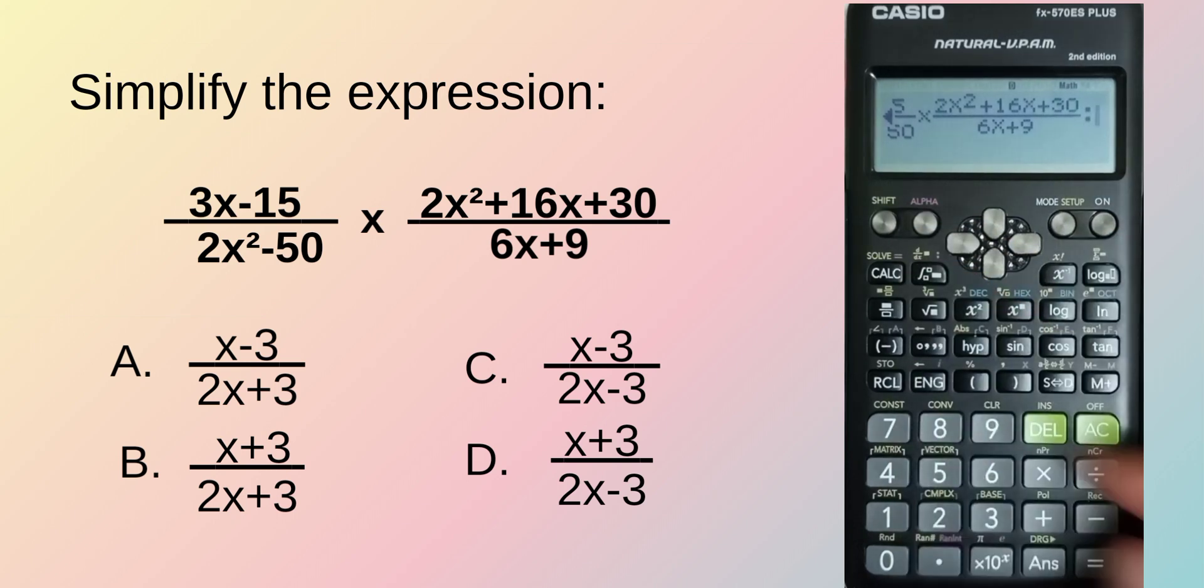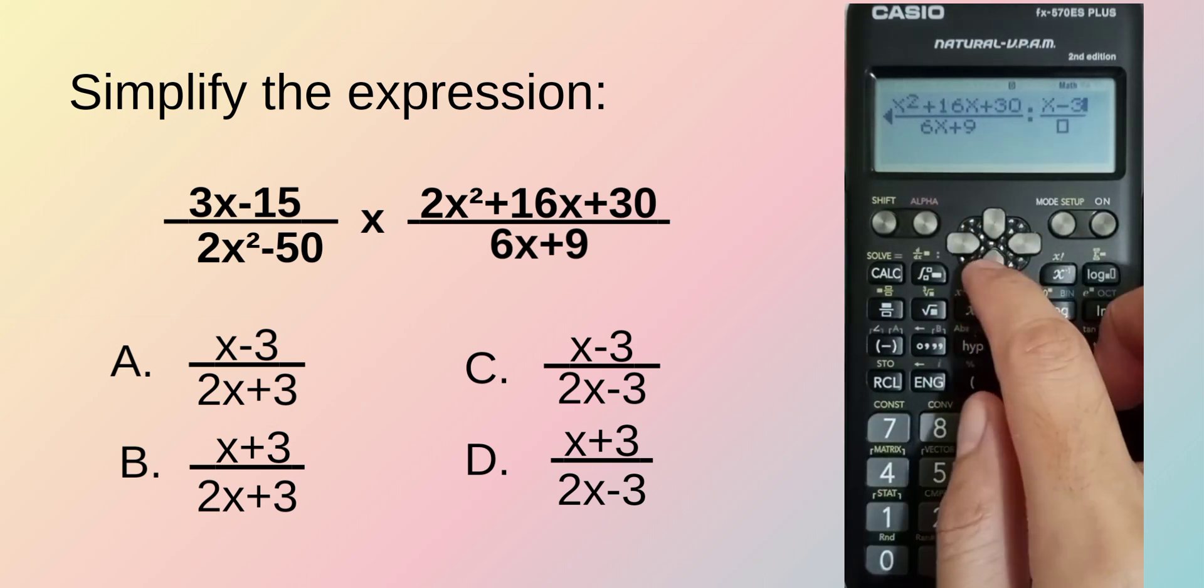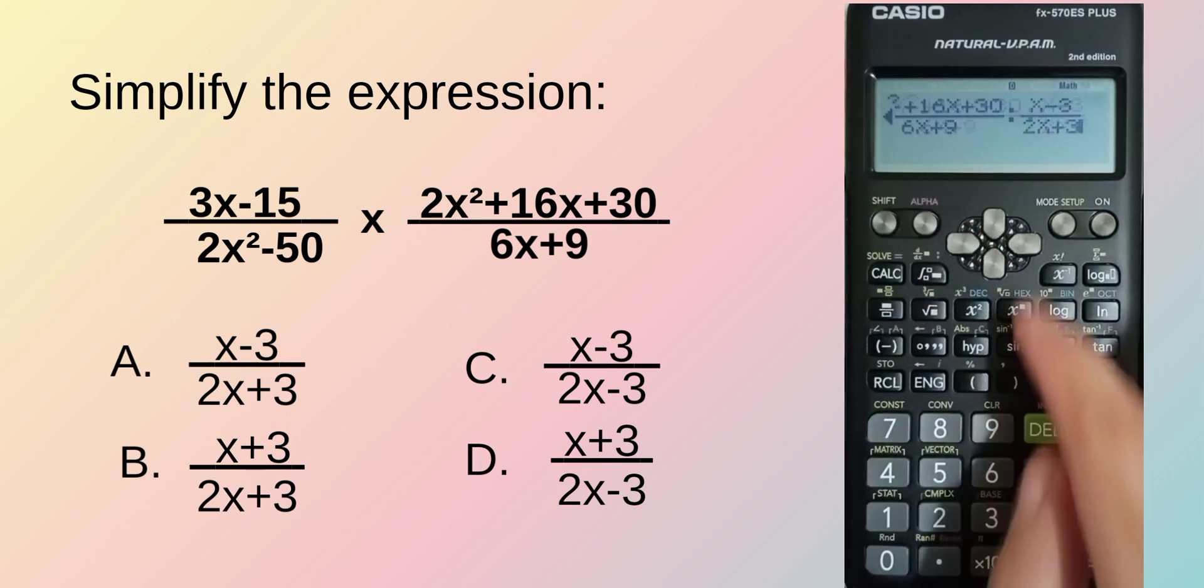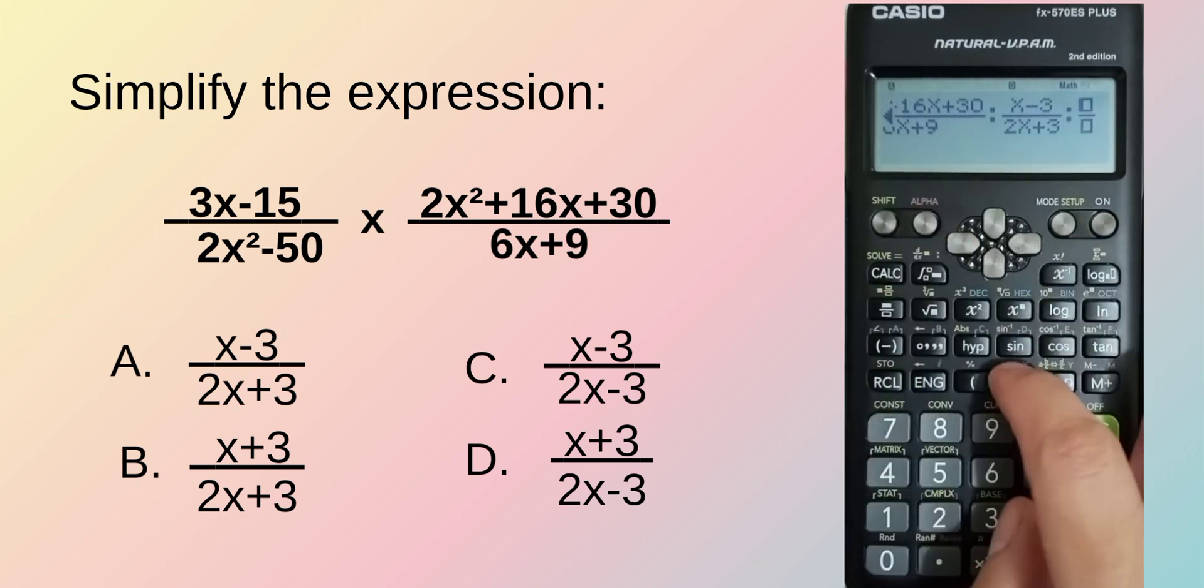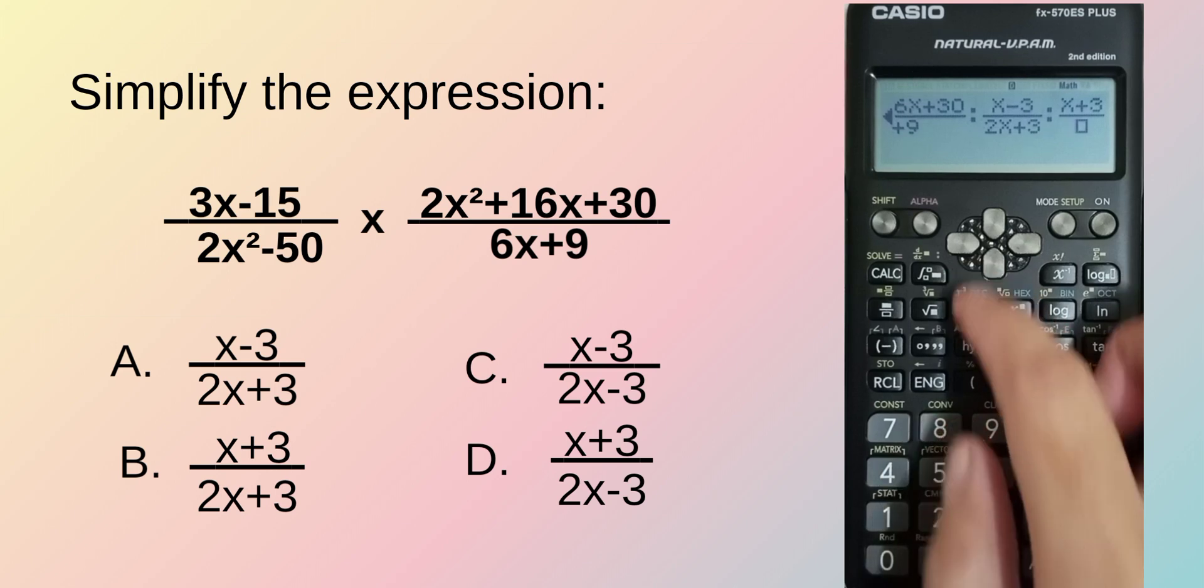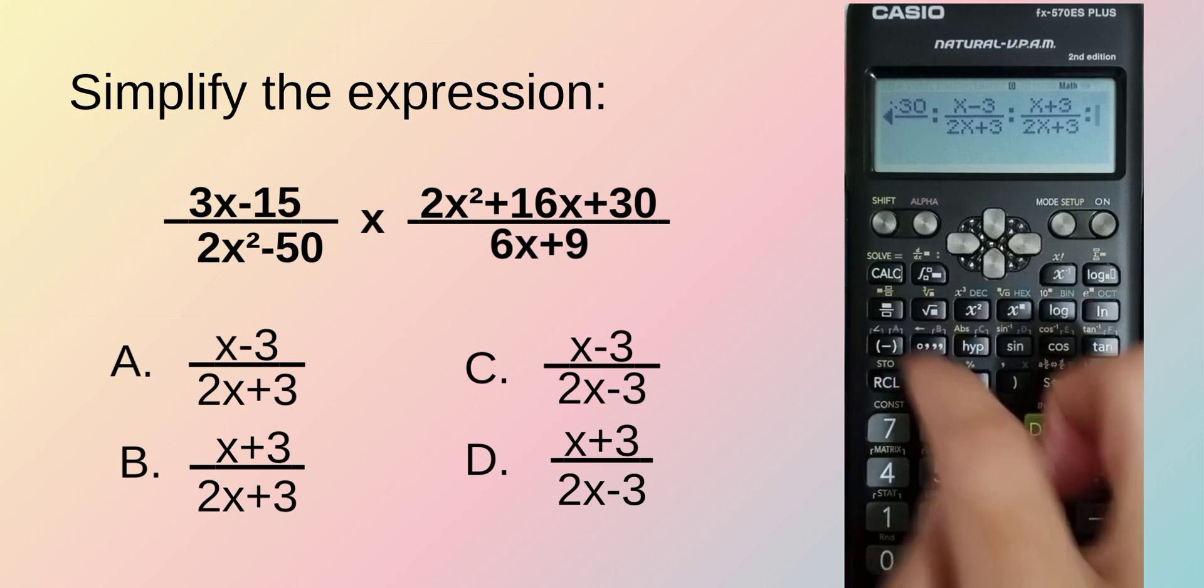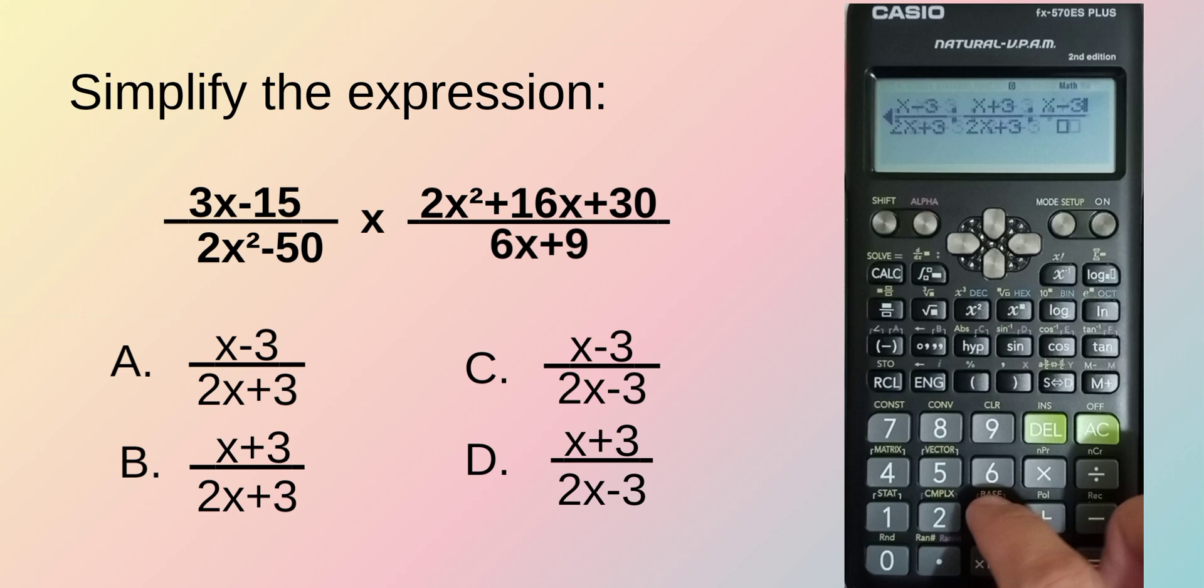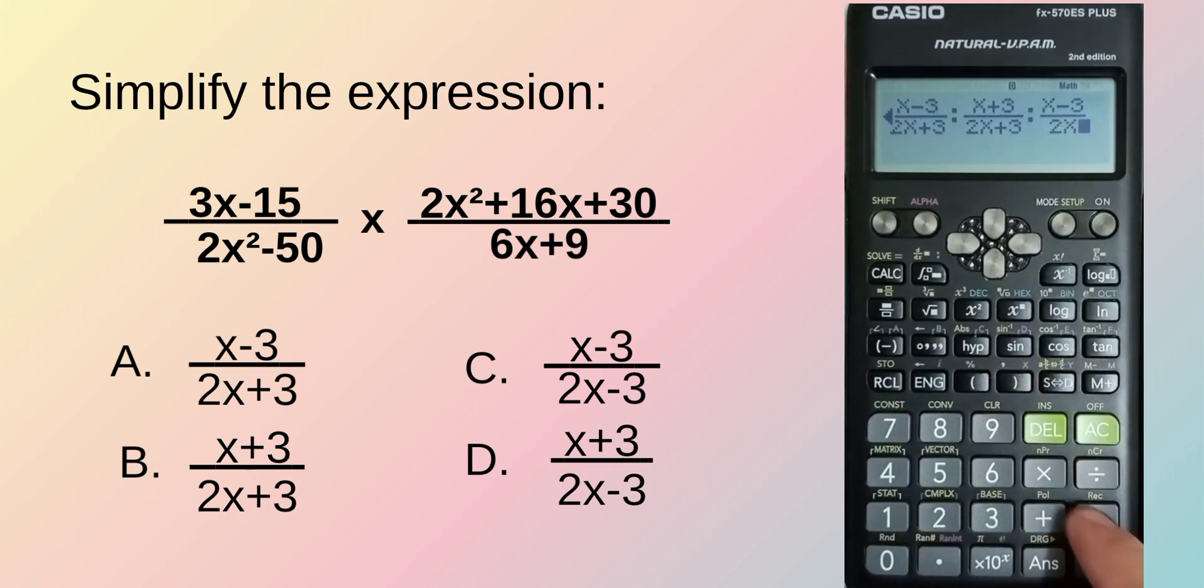Then separate or column input the choices. For A: x minus 3 over 2x plus 3. B: x plus 3 over 2x plus 3. C: x minus 3 over 2x minus 3.